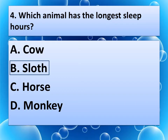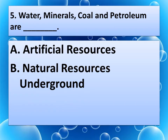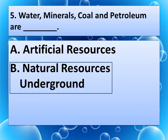Now next question. Water, Minerals, Coal, and Petroleum are dash. Options are A. Artificial Resources, B. Natural Resources, Underground. Think about the correct answer. And the correct answer is B. Natural Resources, Underground.